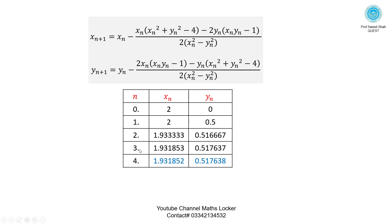You can check it. In the third iteration and the fourth iteration, the values like this same. So stop the loop. You can take the value of X so 1.931852 and Y 0.517638. This is for the solution.